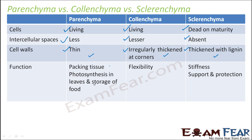In terms of function: parenchyma is the packing tissue, found in stem, leaf, root, and everywhere. Its functions include photosynthesis, floating in aquatic plants in the form of aerenchyma, and storage of food, water, and nutrients. That is why parenchyma are called unspecialized cells — they can perform a variety of functions. Colenchyma, with even lesser intercellular space, provides a lot of flexibility to plant parts. Sclerenchyma, with absolutely no intercellular spaces and very thick cell walls impregnated with lignin, provides stiffness, support, and protection. With this, we will end our discussion on simple permanent tissue.